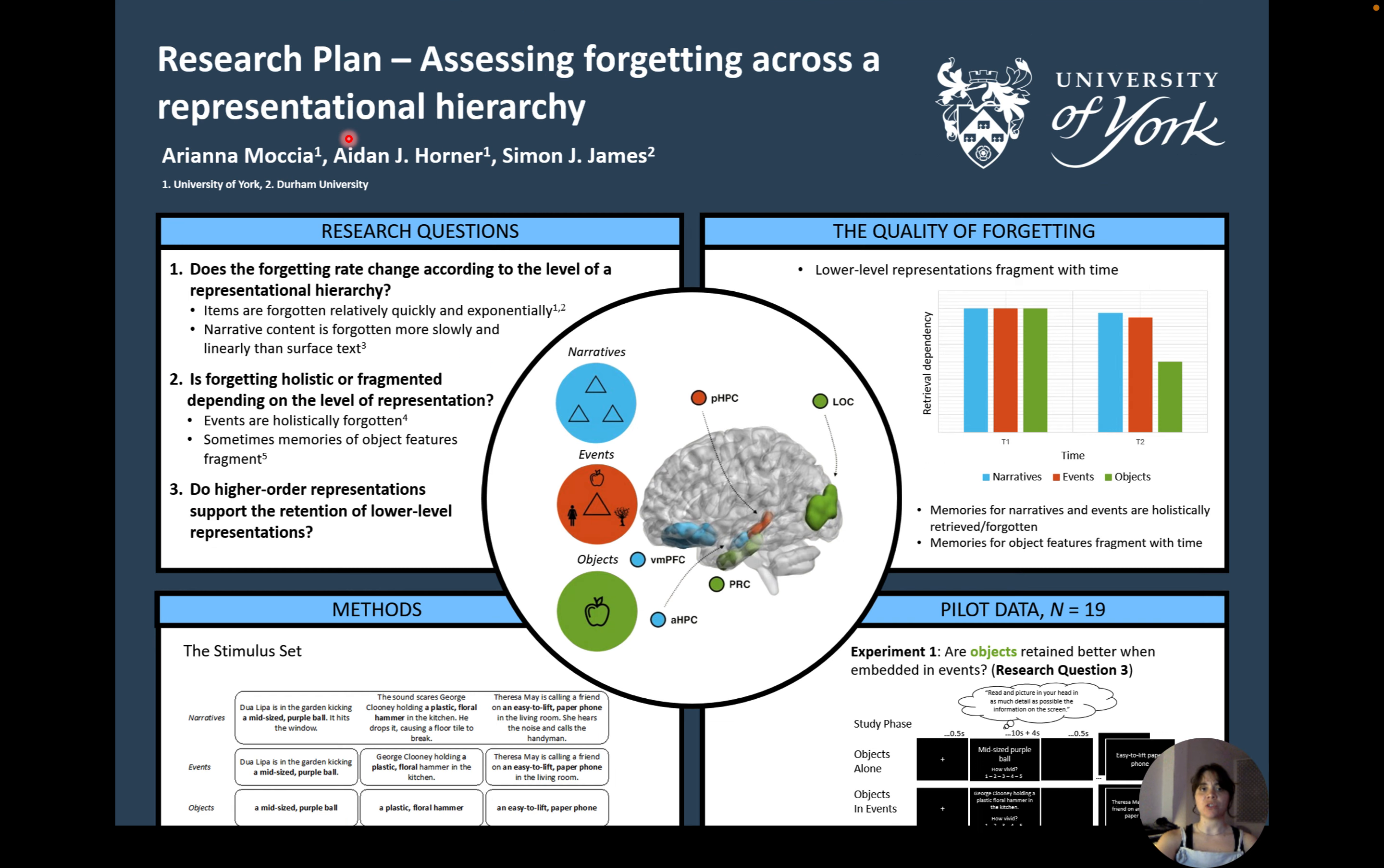Our first question concerns the rate of forgetting. We've long known from memory studies that we forget encoded items such as individual words exponentially with time. However, we can remember our favorite stories from childhood even after years have passed. Research has shown that narratives are forgotten more slowly and linearly than their surface text. This suggests that the rate of forgetting may depend on whether higher or lower level information is being encoded.